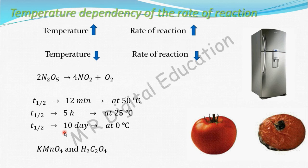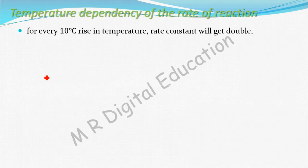One more example: in a mixture of KMnO4 and H2C2O4 — that is, potassium permanganate and oxalic acid — potassium permanganate gets decolorized more fast at higher temperature than at lower temperature. For every 10 degree Celsius rise in temperature, the rate constant will get double — that is, the rate of reaction will get double.